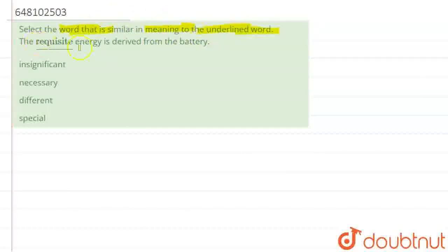So basically, this is the underlined word and we are given a sentence so that we can understand the context in which we are talking about this word. So the requisite energy is derived from the battery.